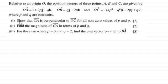For the first part of this question we've got to show that OA is perpendicular to OC for all non-zero values of P and Q for two marks. And then in part two, find the magnitude of the vector CA in terms of P and Q for two marks. And finally, for the case where P equals 3 and Q equals 2, find the unit vector parallel to BA for three marks.